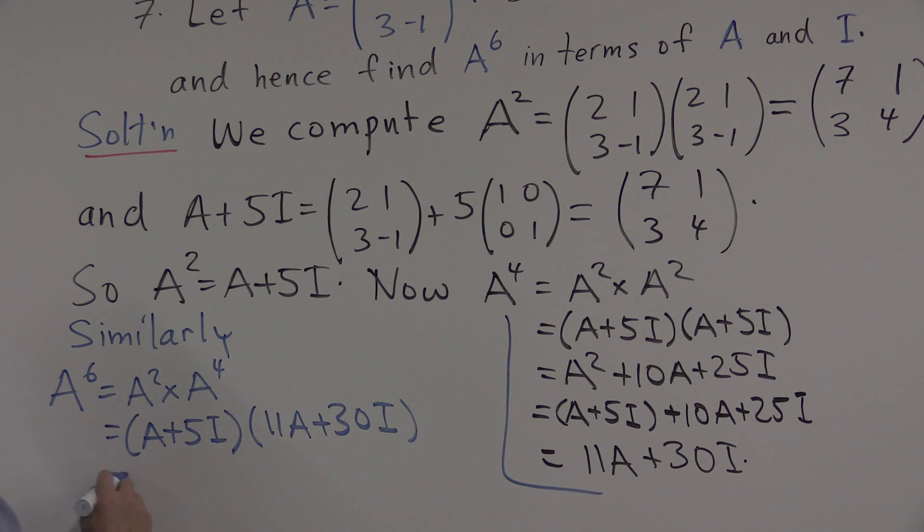What is that? Well, expanding it out, 11A squared. How many A's? A times 30I is 30A. 5I times 11A will be 55A. So 30A plus 55A is 85A plus 150I.